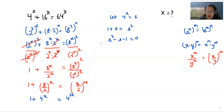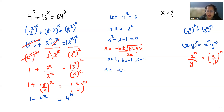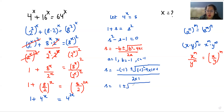It looks like a quadratic equation. We are going to use the quadratic formula: s equals (−b ± √(b² − 4ac)) / 2a. Here a is the coefficient of s², b is the coefficient of s, and c is the constant. Putting in the values: s equals (−(−1) ± √((−1)² − 4·1·(−1))) / (2·1), so s equals (1 ± √(1 + 4)) / 2, which gives s equals (1 ± √5) / 2.